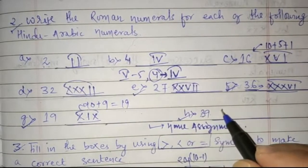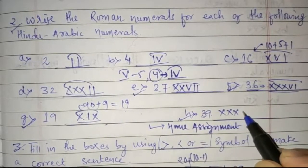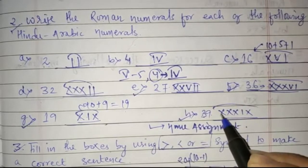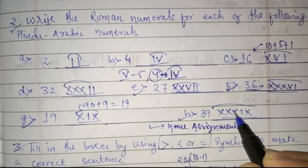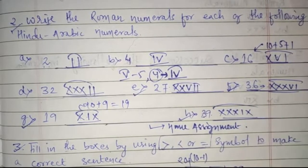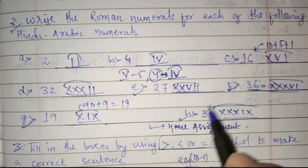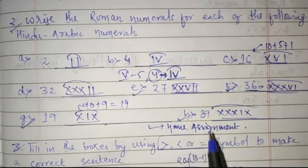Similarly, 39 will be written as 30 then 9: XXX then IX is your 39. So, question number 2, F, G, H is over.